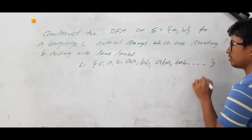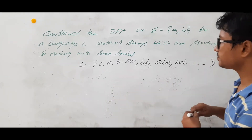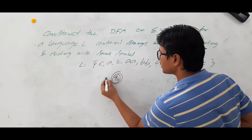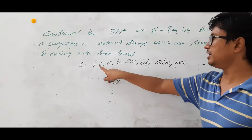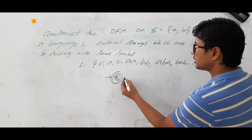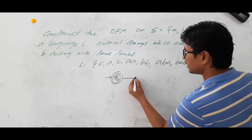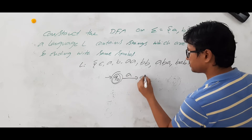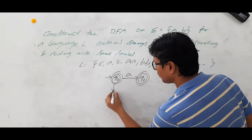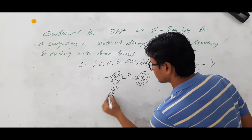All this set of strings belongs to language L. So if it is epsilon, then the initial state will also act as a final state. Now, on alphabet A you should accept, and on alphabet B you should accept it.